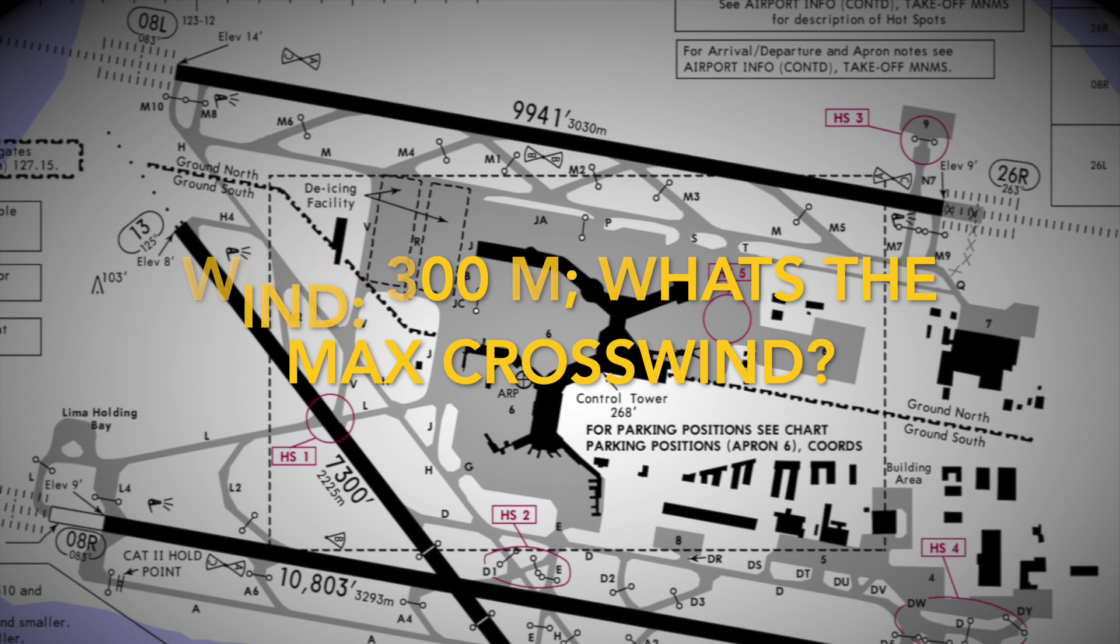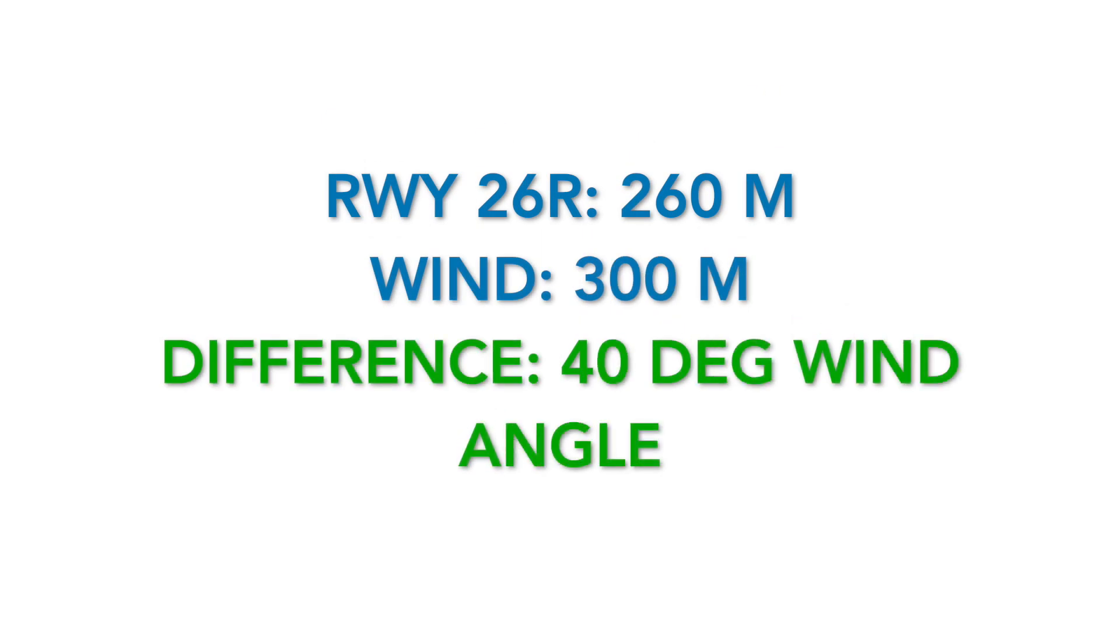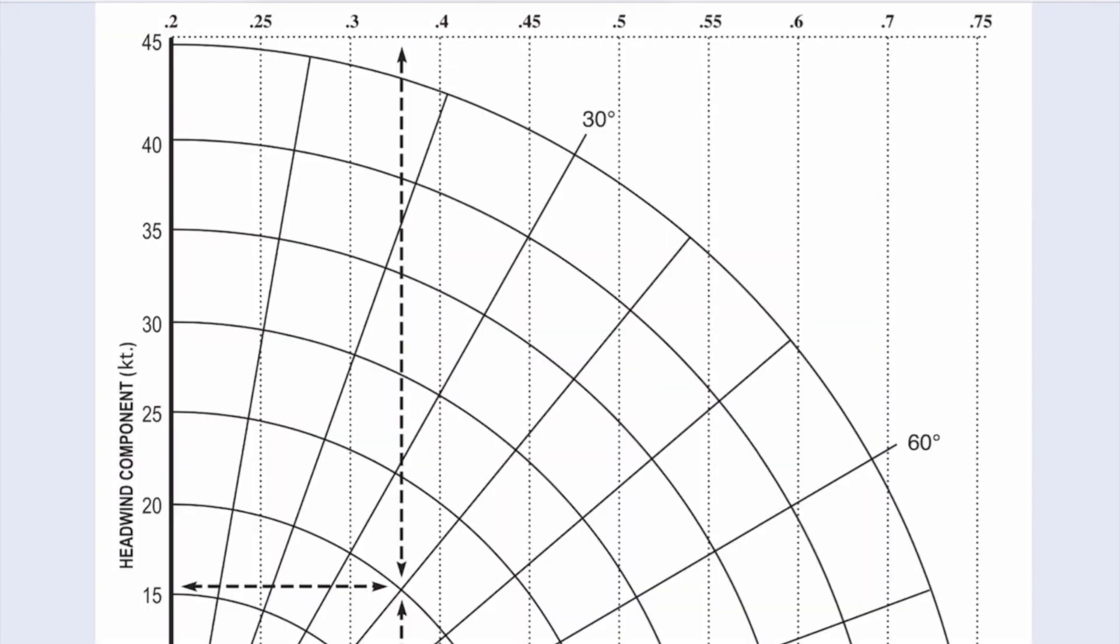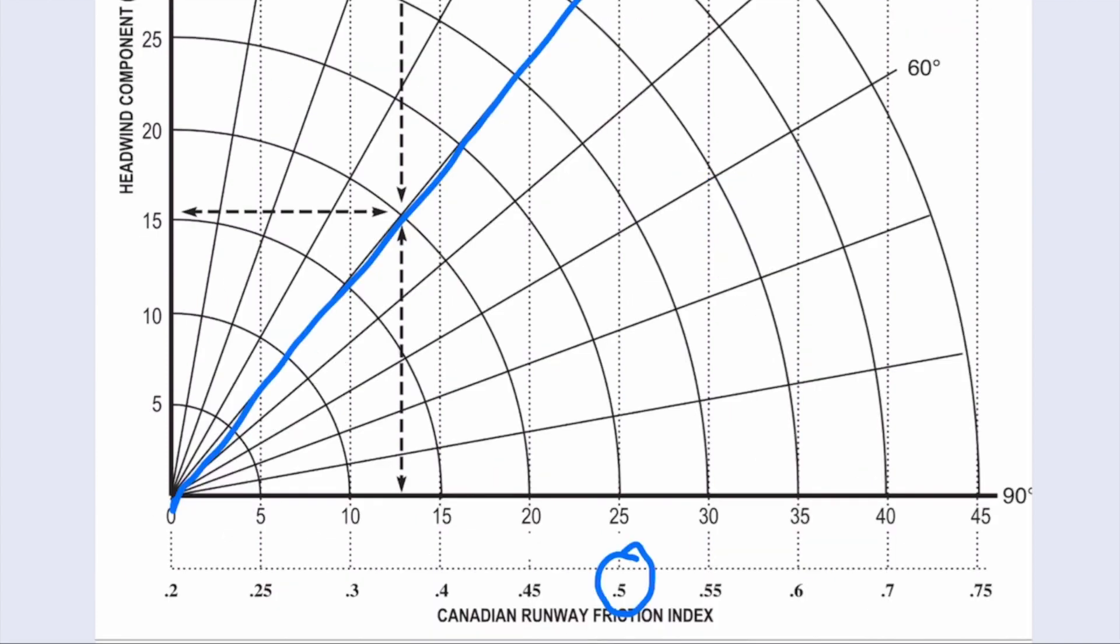If you take 26 right, that's 260 degrees. The winds are coming from 300 degrees, that's a 40 degree wind angle. So like before we want to enter the chart from the wind angle, so 40 degrees, and now I would just draw the line out.